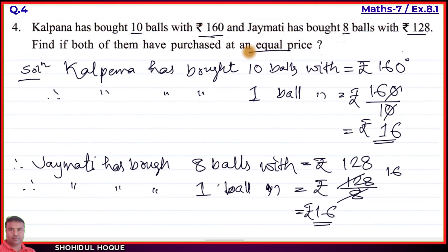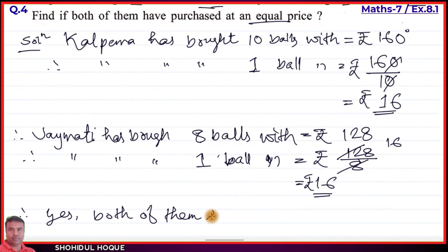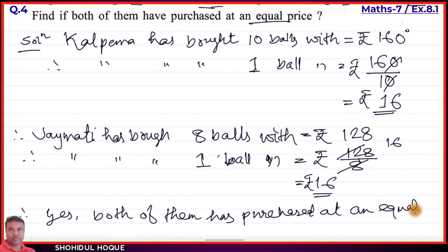Therefore, yes — both of them have purchased at an equal price. Both paid the same price per ball. Question number 4 is now solved. Moving on to question number 5.